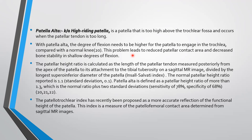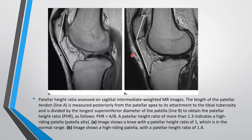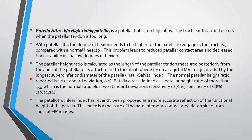The patella trochlear index has recently been proposed as a more accurate reflection of the functional height of the patella, measuring patellofemoral contact area from sagittal MR images. On the sagittal MR image, we take the longest superior-inferior diameter of the patella and measure the length of the patellar tendon, using the formula A (tendon length) divided by B (patellar diameter). A normal value is 1.1 with a standard deviation of 0.1; a value greater than 1.3 indicates patella alta.